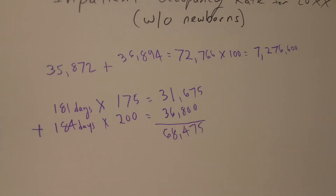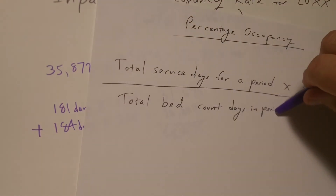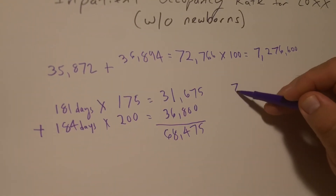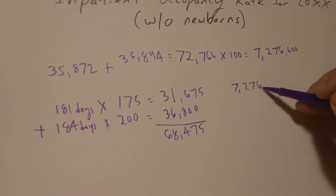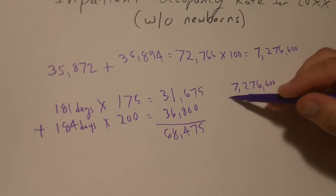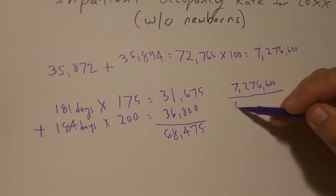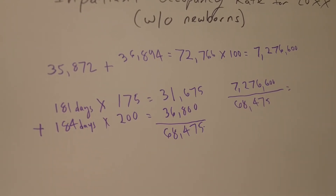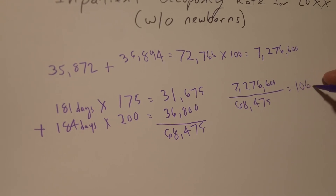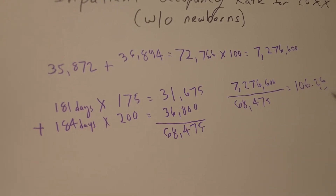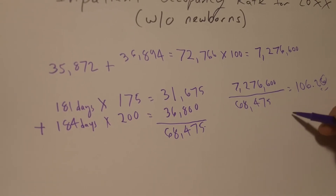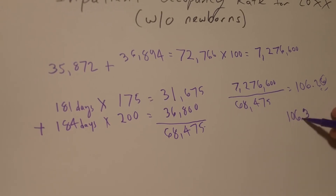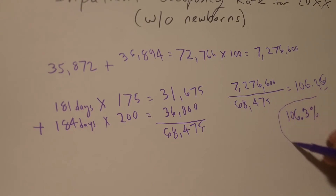That is the bottom — the total bed count days in the period, in this case the whole year. So we're going to take our 7,276,600 and divide it by 68,475. Dividing that out, I get 106.26. Rounding that, since the digit after is greater than 5, this becomes 106.3, and this is a percentage: 106.3%.